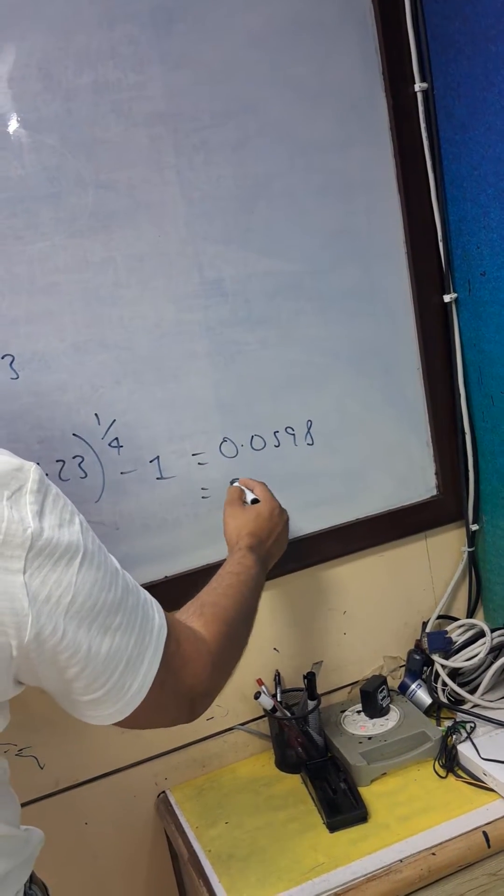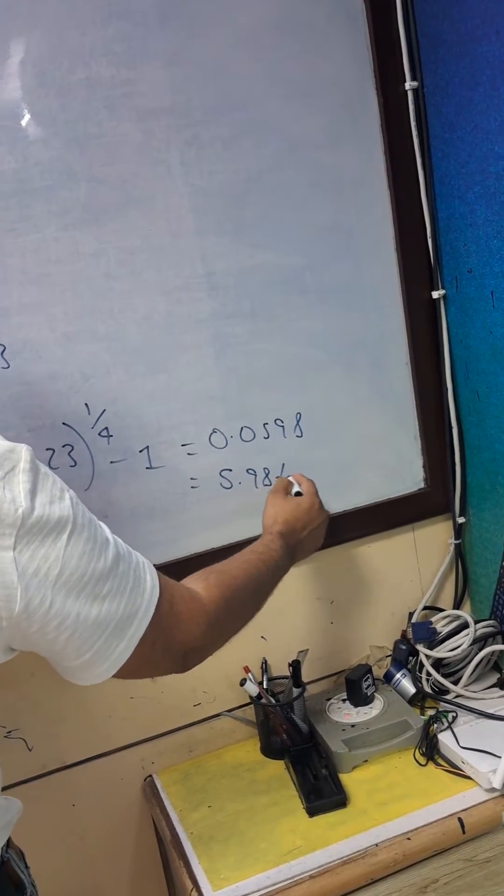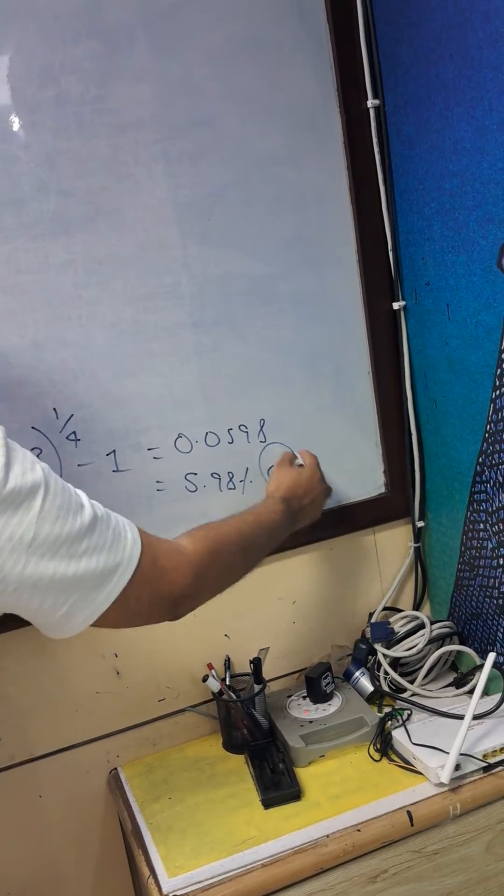This means 5.98% is your geometric mean.